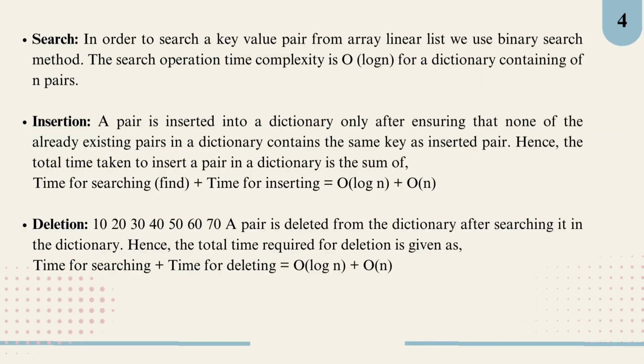Let's take a closer look at each operation in the sorted array approach for a dictionary. First search: to search for a key-value pair, we use the binary search method. Since the array is sorted, binary search is fast and efficient, giving us a time complexity of O(log n) for a dictionary with n pairs.